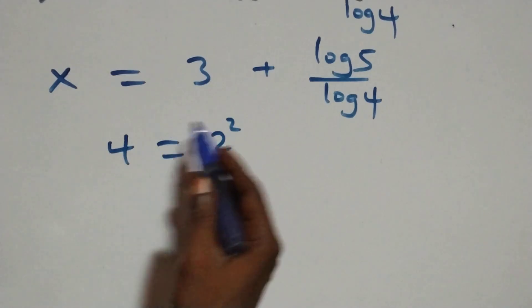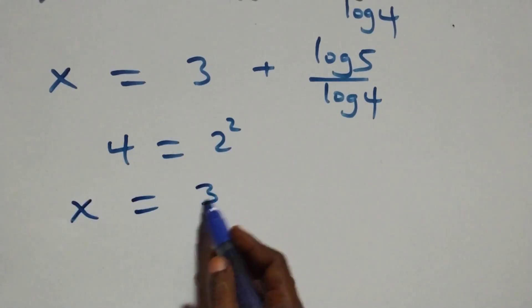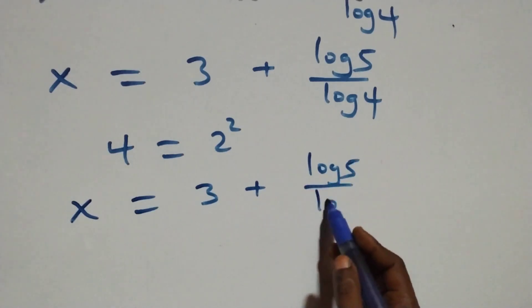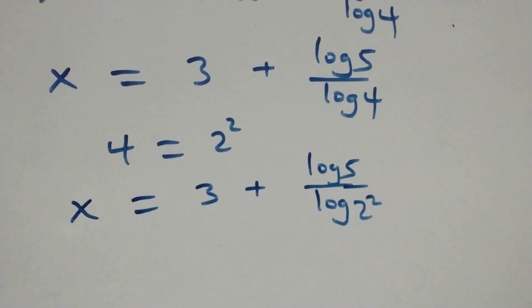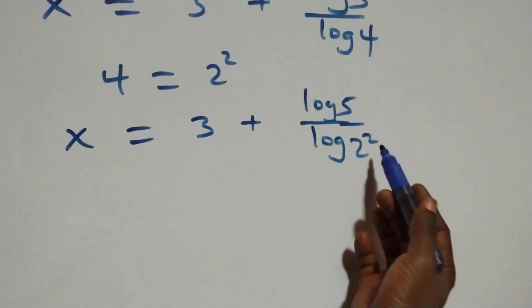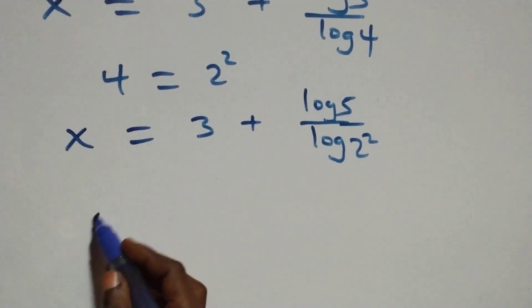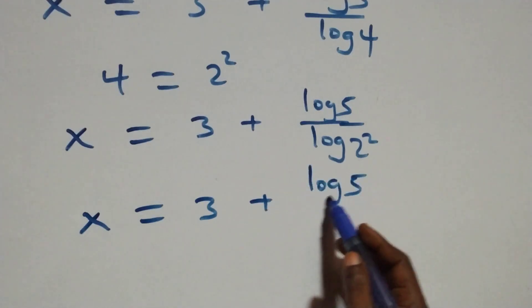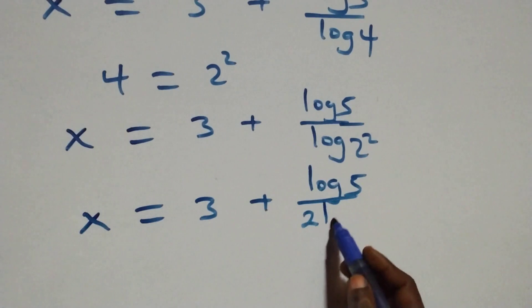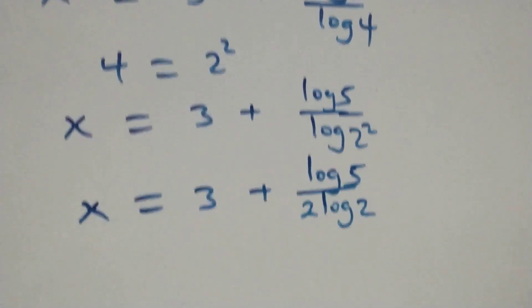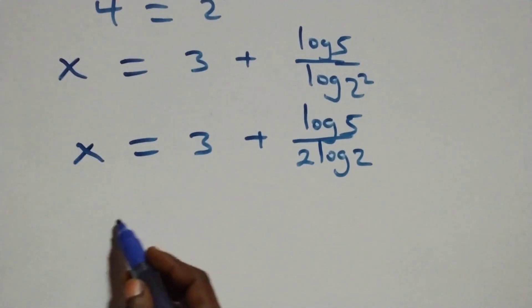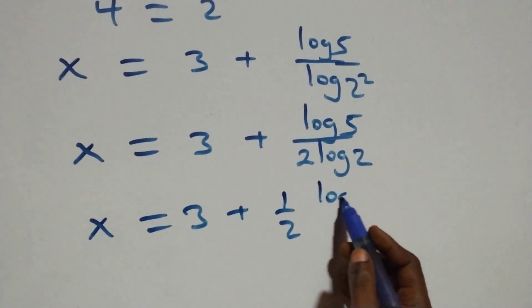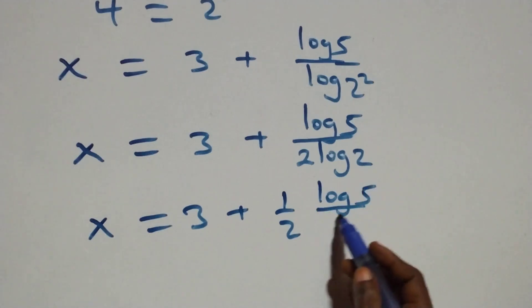The equation becomes x equals 3 plus log 5 over log of 2 squared. Applying the power law, the 2 comes down to the denominator, giving us x equals 3 plus log 5 over 2 log 2. We can rewrite this as x equals 3 plus one half multiplied by log 5 over log 2.